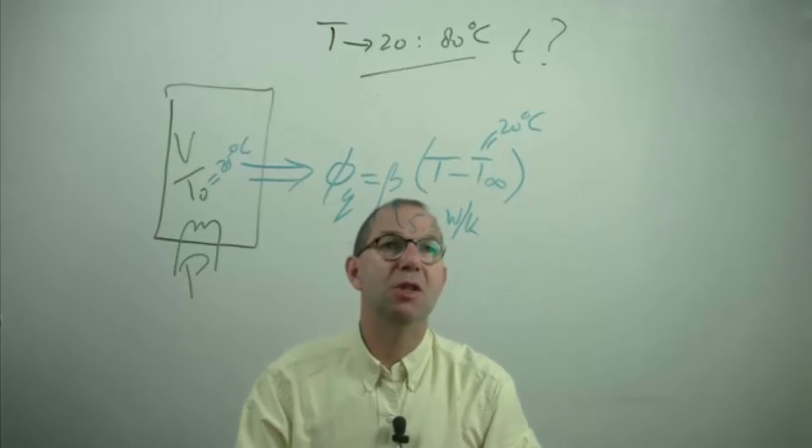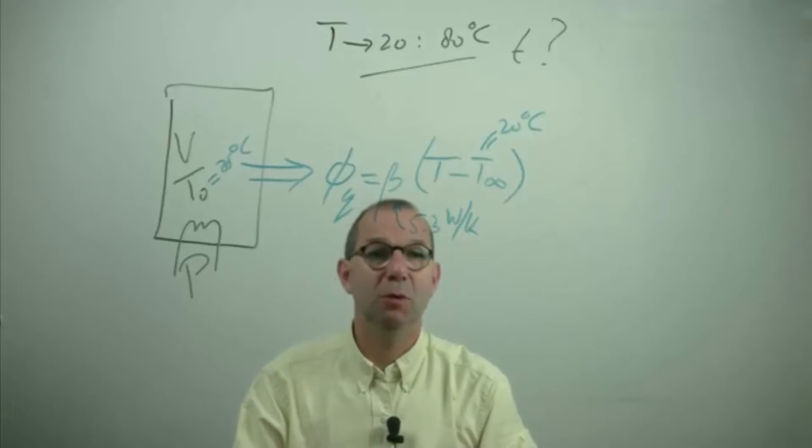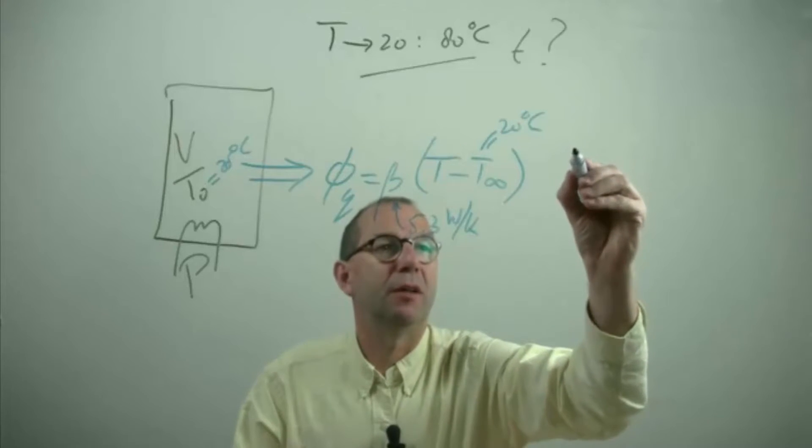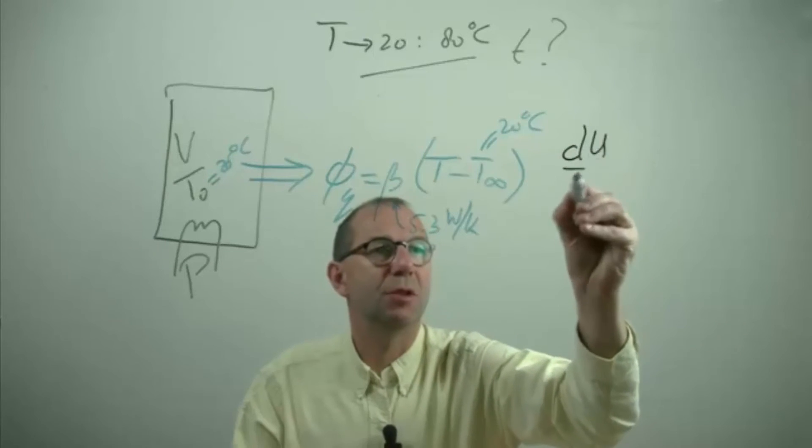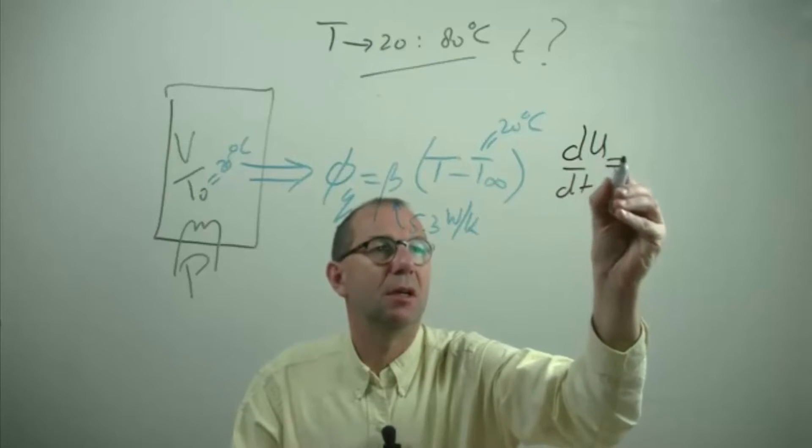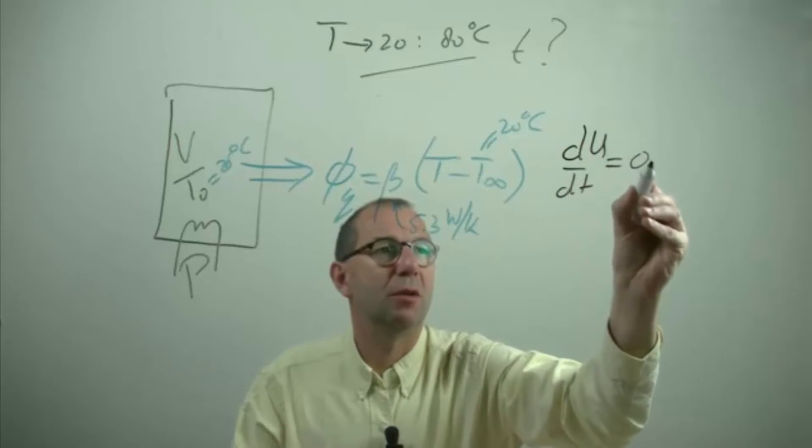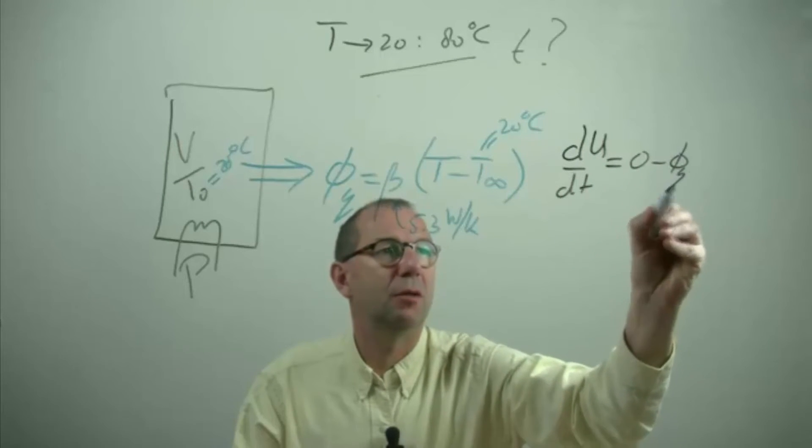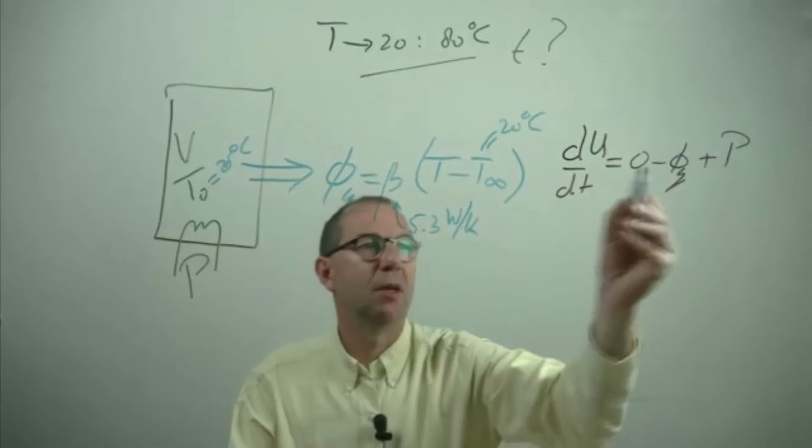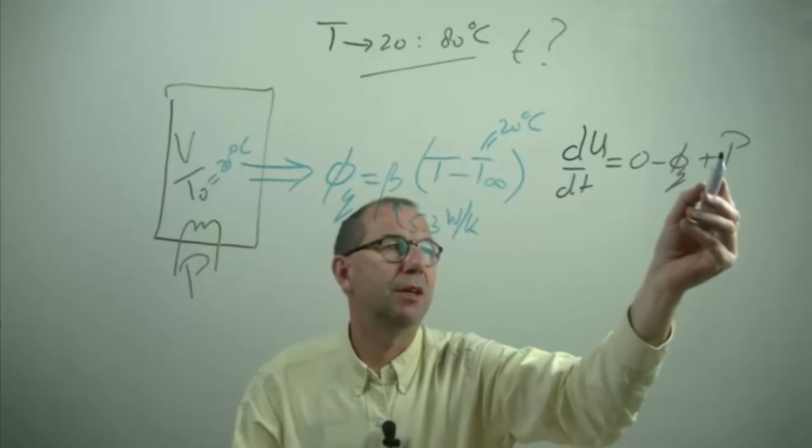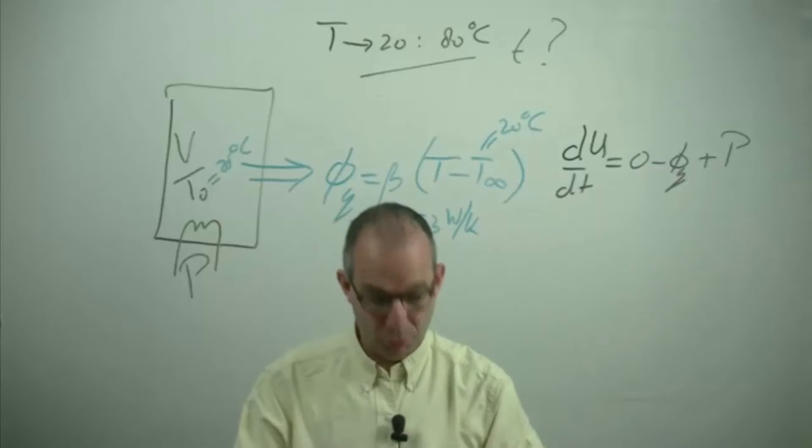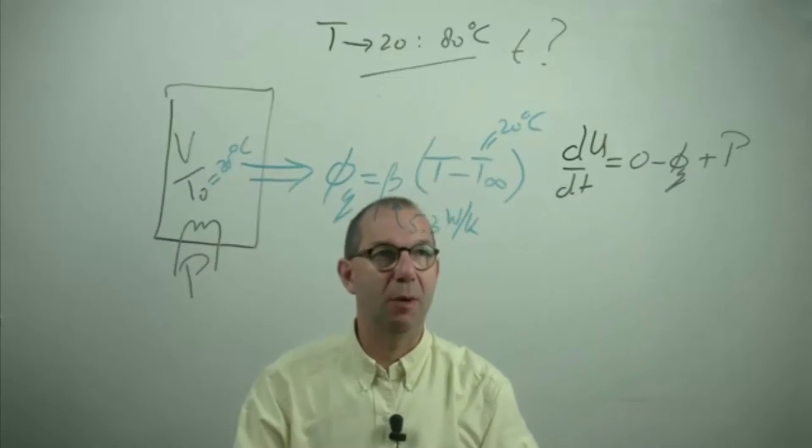Well we know what to do. We need to set up an energy balance. We already considered that in the previous example. And we have that the internal energy, so the change of temperature, equals zero minus the outflow plus the production this P. You could also say that's an inflow then this becomes a zero and the P moves over to an inflow. So it gives the same equation.